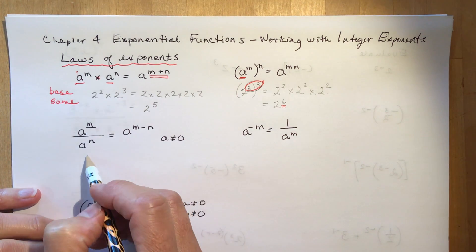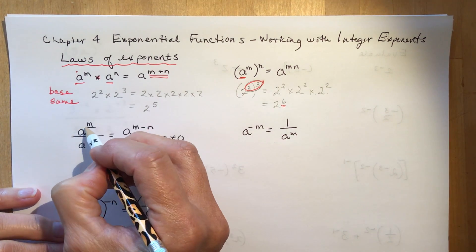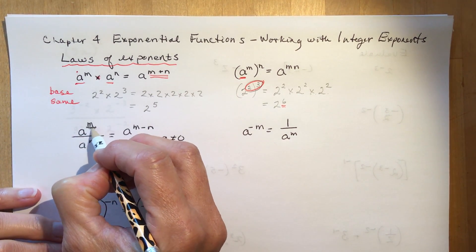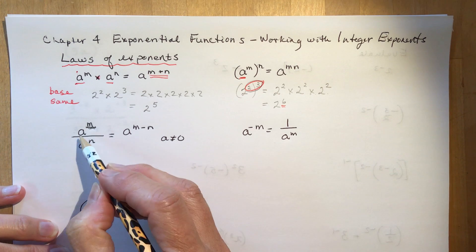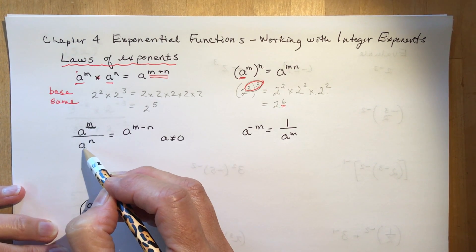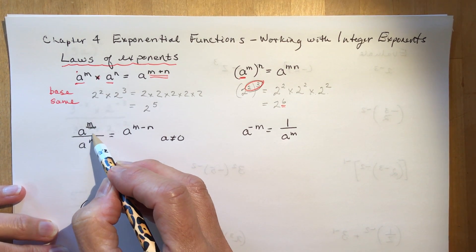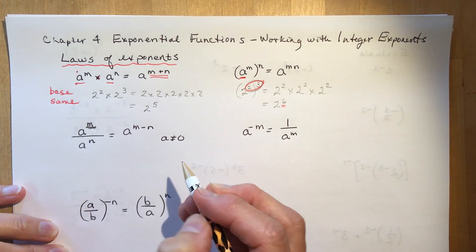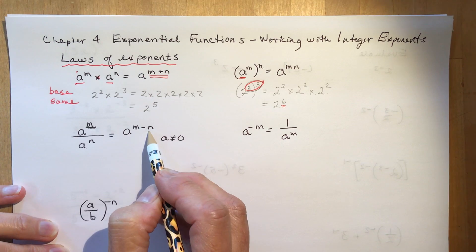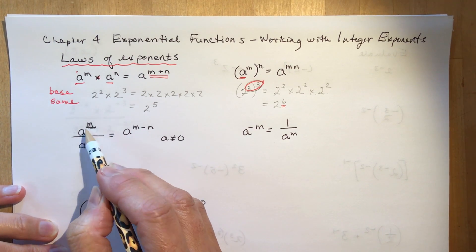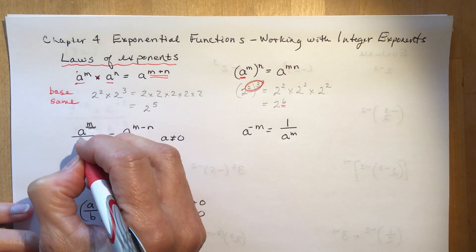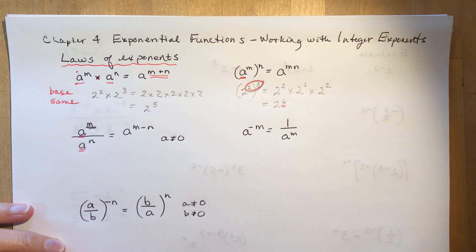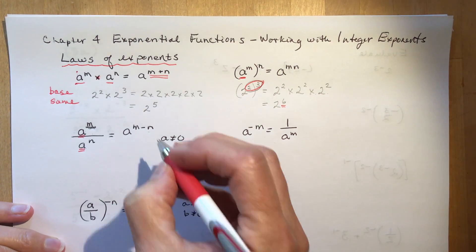If we have a to the m divided by a to the n, that says you subtract the exponents. If you're dividing and the bases are the same, you subtract the exponents.